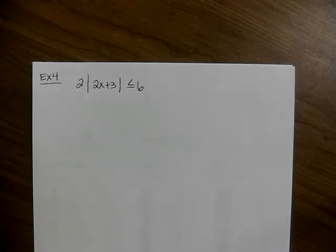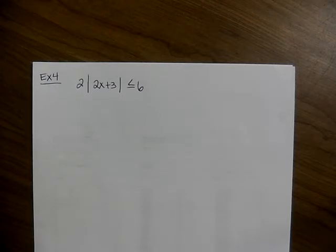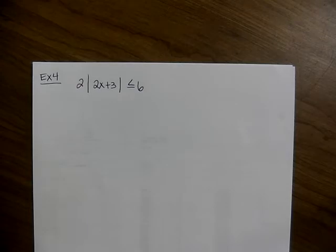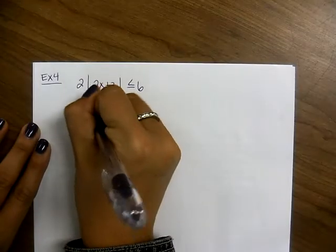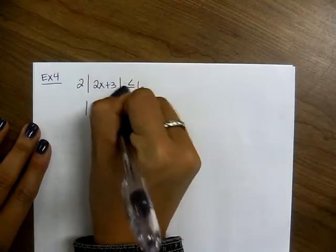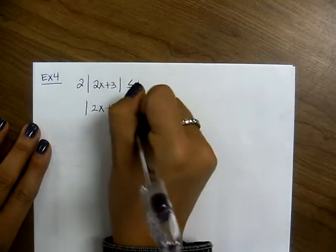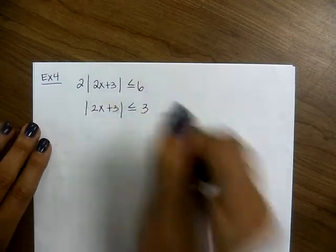The book will tell you to graph number lines, but you don't have to. I just want interval notation. What do we have to do first? We have to isolate the absolute value, so we divide by 2 first. When we do that, we end up with the absolute value of 2x plus 3 is less than or equal to 3.